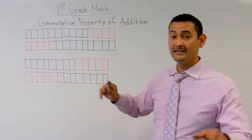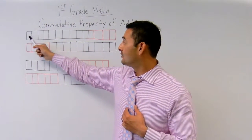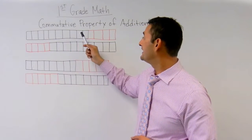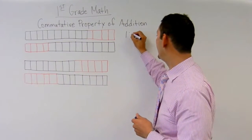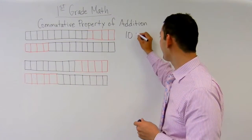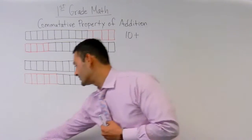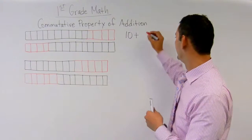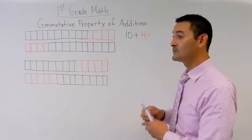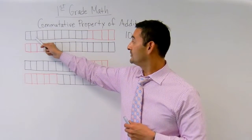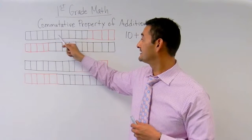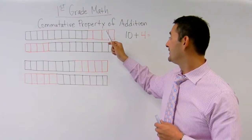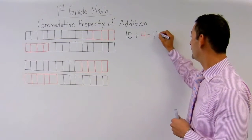So let's go back and count the black boxes again. How many do we have? One, two, three, four, five, six, seven, eight, nine, ten. We have ten black boxes. Plus, how many red boxes do we have? Let's take a look — one, two, three, four. And ten plus four equals fourteen.